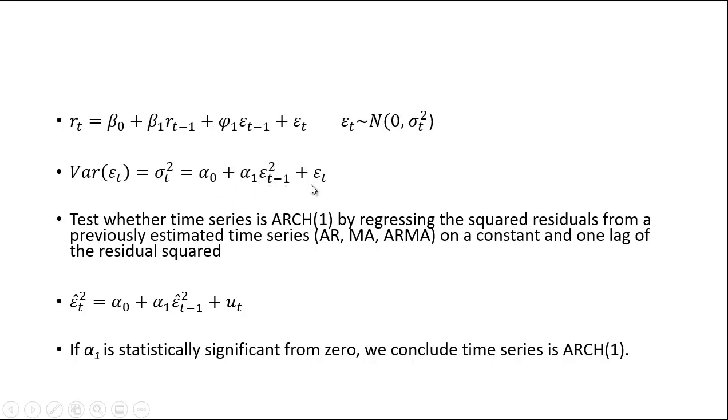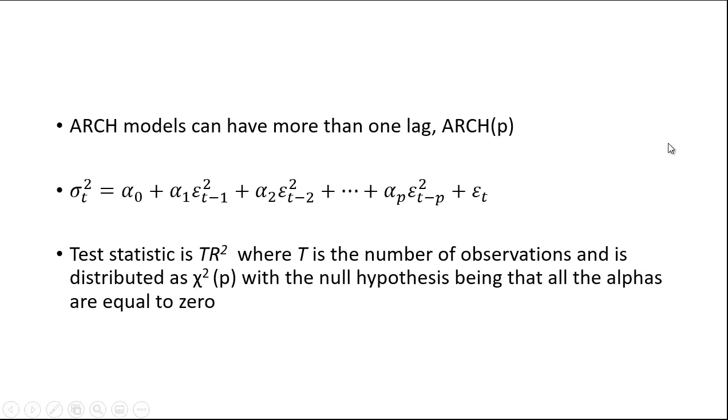To test whether a time series is ARCH(1), that is one lagged period of the squared error term, we regress the squared residuals from our previously estimated time series, our ARMA or ARIMA model, on a constant and one lag of the residual squared. If this alpha 1 is statistically significant from zero, we conclude that the time series is ARCH(1).